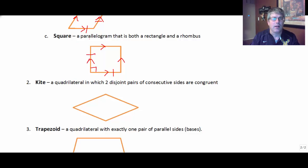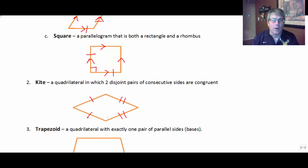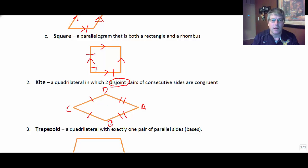That's the end of our parallelogram family. Now, a kite is a quadrilateral, not a parallelogram, in which two disjoint pairs of consecutive sides are congruent. So it's just a four-sided figure in which we have two pairs of consecutive sides congruent but they're disjoint. So AB and BC are not congruent, but BC and CD are; and CD and AD aren't, but AD and AB are. That's that whole disjoint business — disjoint pairs of consecutive sides congruent.